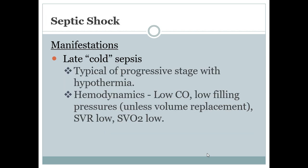Late or cold sepsis is the late stage of sepsis. It's very typical of your progressive stage with hypothermia — cold, late stage. It's characterized by cool, pale skin, weak and thready pulses, and hypothermia.